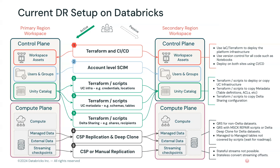Moving down, we have our managed and external data. This can be done technically via either Cloud Service Provider Replication or DeepClone. We recommend DeepClone for all Delta data because it provides transactionality — meaning you're always going to end up with either a full copy of your table or nothing — and it also provides incremental copies, so when you do a DeepClone it only copies the most recent changes to your data. There's a slightly different version of this between external and managed data, and we'll provide some examples of this in the companion blog.